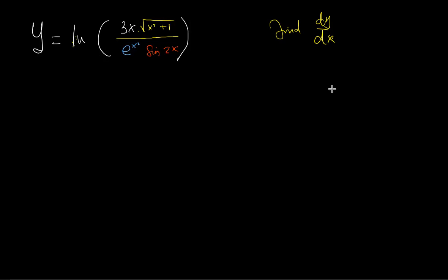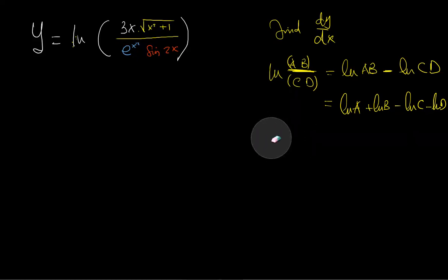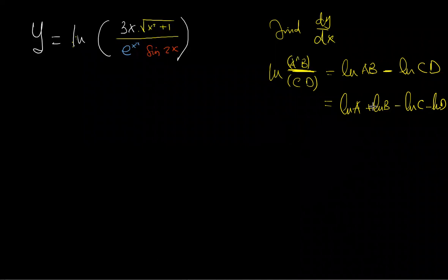Remember, we spoke in a previous video that deals with logarithmic differentiation. We said if we have ln of (a × b) / (c × d), it becomes ln(a) + ln(b) − ln(c) − ln(d). The minus comes from the fact that this function is dividing. Also, if you have a power n, another property says you can drop the n in front. This is what we want to use.